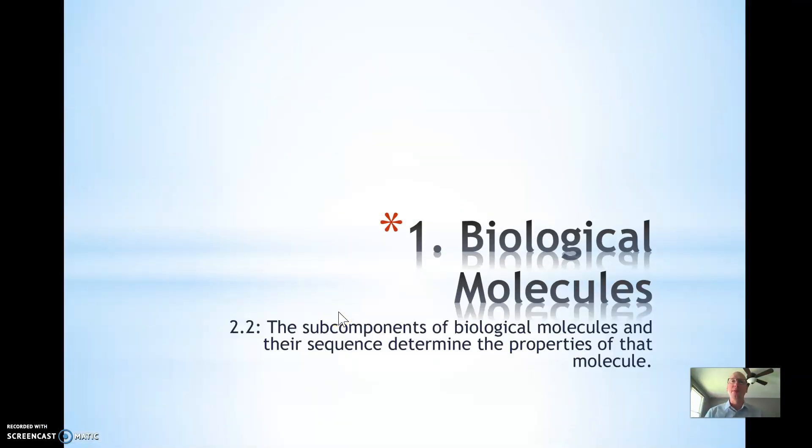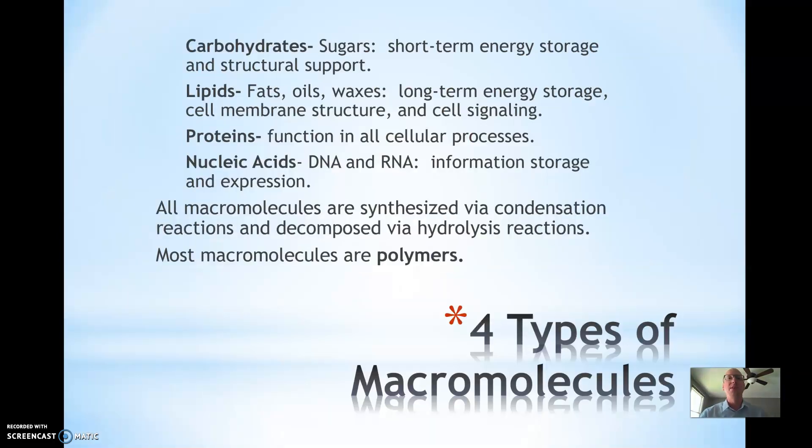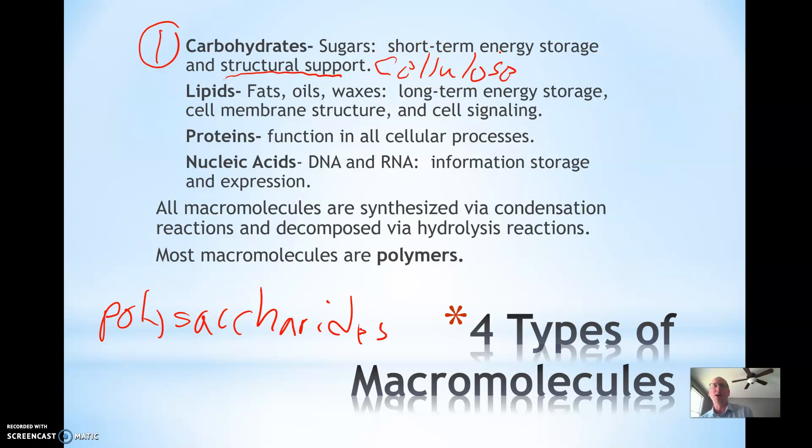These are the four major building blocks that make up all living things. Number one, we have carbohydrates, also known as polysaccharides. These are used mostly for short-term energy storage, like running a sprint. Sometimes used for structural support, best example being cellulose found in plants to build their cell wall. Sugars always end in -ose so you know it's a sugar.